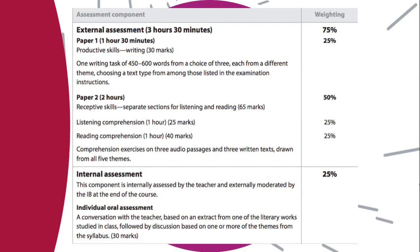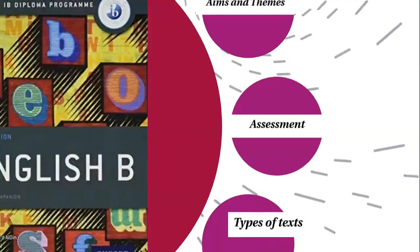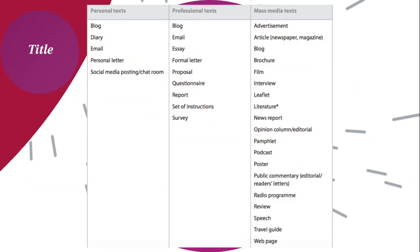Paper 2 works on your receptive skills — there's a listening comprehension section and a reading comprehension section. Comprehension exercises will be based on three audio passages and three written texts drawn from all five themes. You'll also be taking part in an oral, which is very important. It's similar to what you see in English A, working on your skills to come up with not only an analysis but demonstrating how proficient you are in speaking English, extending your thought, and engaging in discussions.